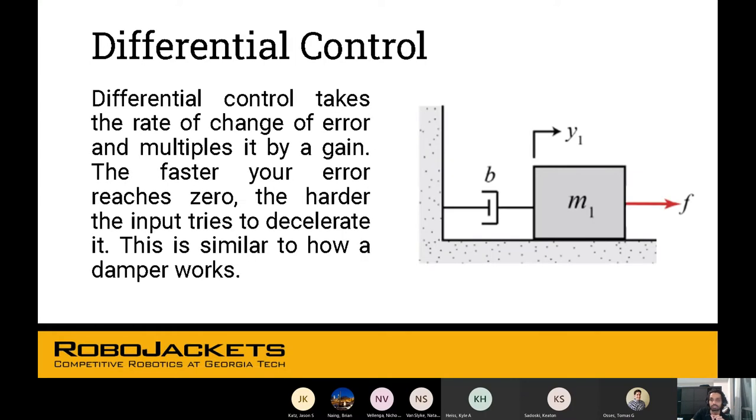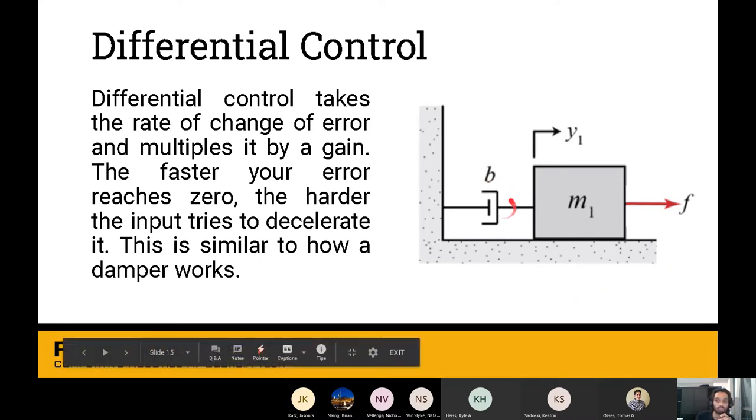Differential control takes the rate of change of error and multiplies that by a gain. This is if your error is rapidly approaching zero, then you want to decelerate it harder. If your error is not that fast, they're just moving slowly, then you don't want to decelerate it that much. You want to keep going until it reaches zero. This is similar to how a damper works. If you apply a really high force on this mass, the damper will try to slow it down harder.